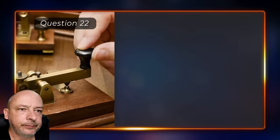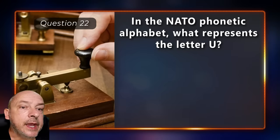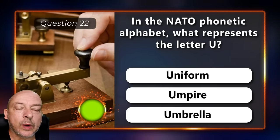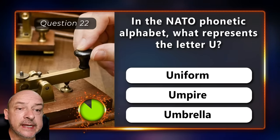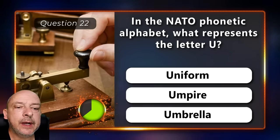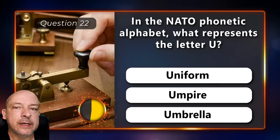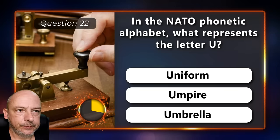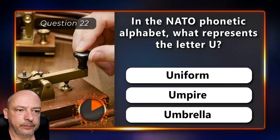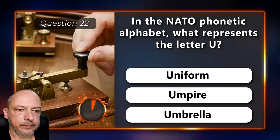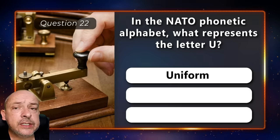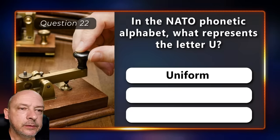In the NATO phonetic alphabet, what represents the letter U — Uniform, Umpire, or Umbrella? The correct answer is Uniform.